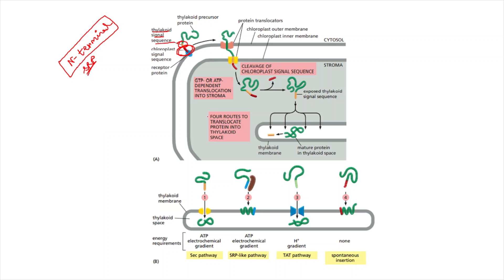The first N-terminal signal sequence directs the protein and helps in its translocation within the chloroplast. The second thylakoid signal sequence helps in the translocation of the protein within the thylakoid. First, a chloroplast protein binds to a protein translocator present in the outer membrane. After binding, it is translocated and then comes to the inner membrane, where another protein translocator present in the chloroplast inner membrane helps in translocation into the interior of the organelle.